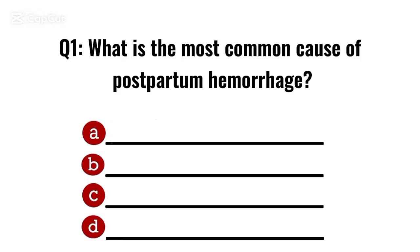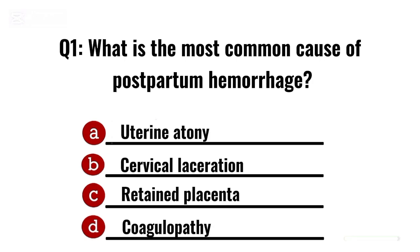Question 1. What is the most common cause of postpartum haemorrhage? Correct option A: Uterine atony.